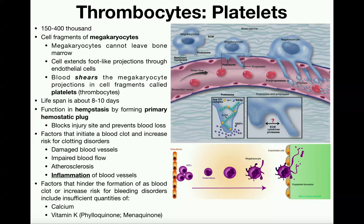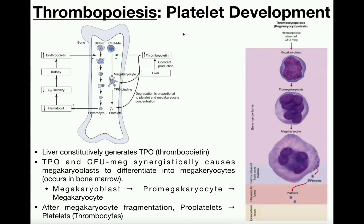Now let's talk more about the platelet developmental pathway. All formed elements are made through hematopoiesis in the red bone marrow. In contrast to red blood cell formation, thrombopoiesis — the formation of platelets — is constant. You can't really change your diet or exercise more to produce more platelets. The liver and kidneys generate the colony stimulating factor called thrombopoietin, and that thrombopoietin triggers a stem cell in the red bone marrow to form a megakaryocyte, which then fragments platelets into the blood.